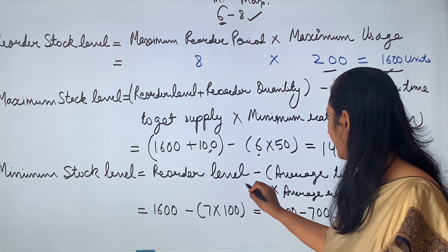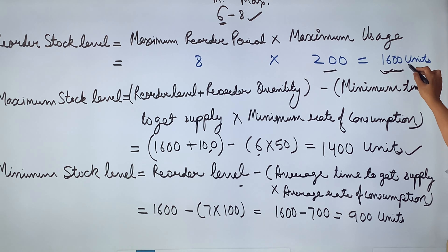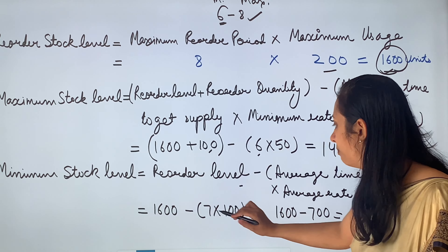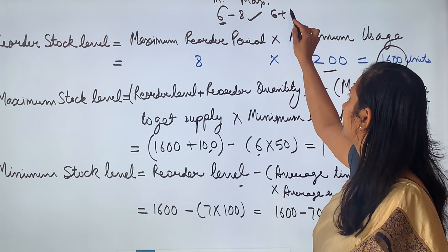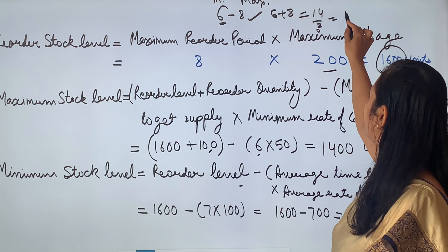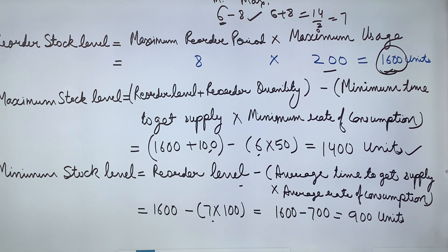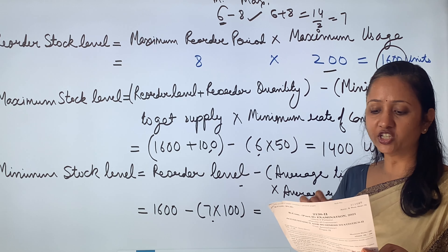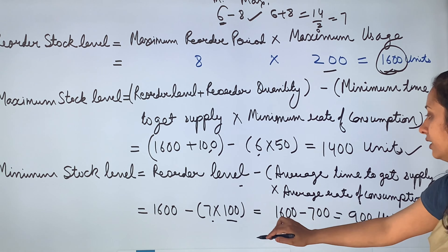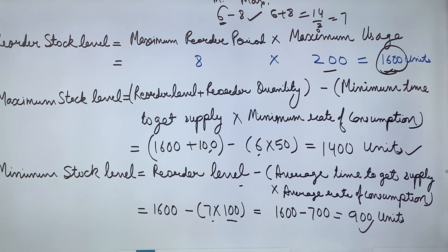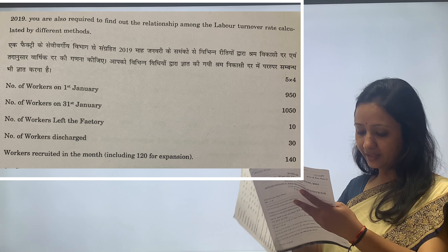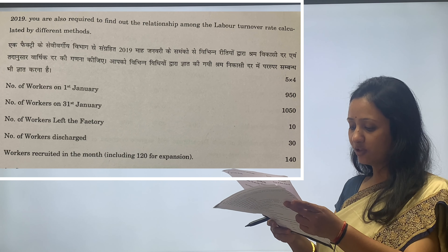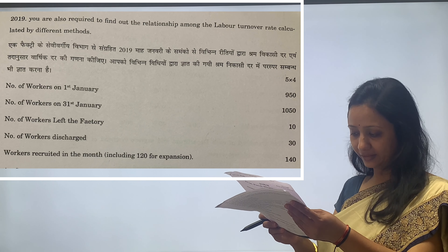Minimum stock level formula = reorder level − (average lead time × average rate of consumption). Average lead time = (6 + 8) ÷ 2 = 7 weeks. Average rate of consumption = normal usage = 100 tubes per week. Minimum stock level = 1,600 − (7 × 100) = 1,600 − 700 = 900 units.